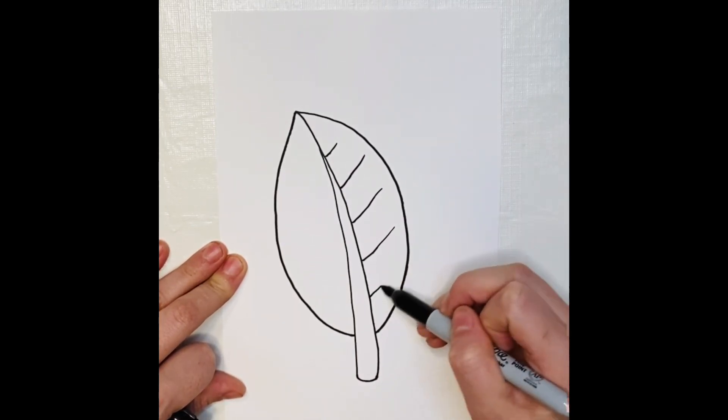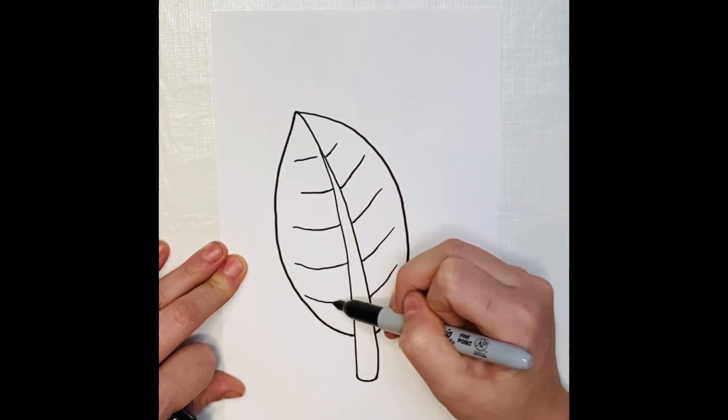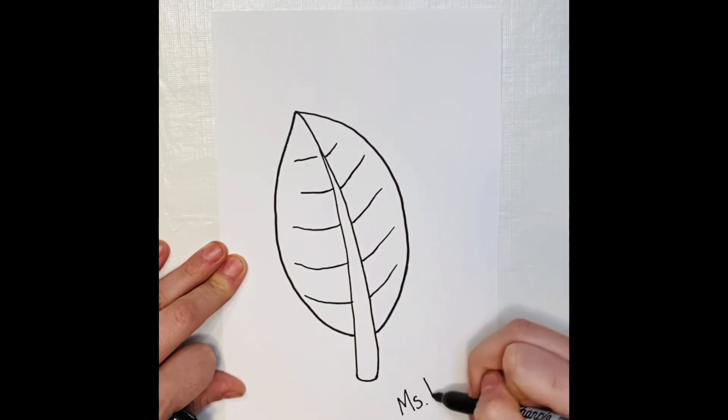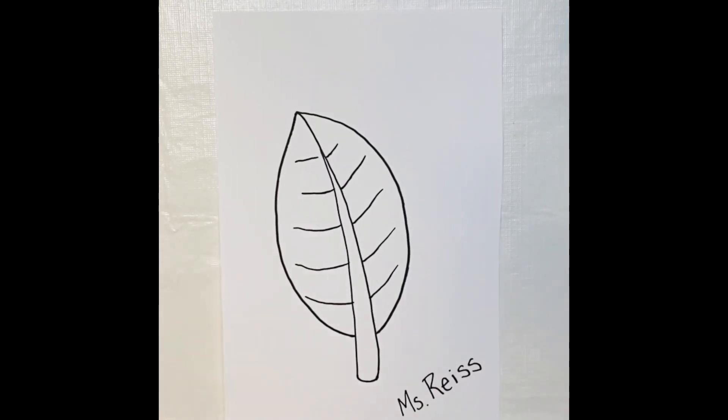I'm going to make my stem first, then a curved line for my leaves or the edges of my leaves, and then I'm going to give it some veins. Of course, write my name.